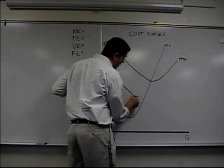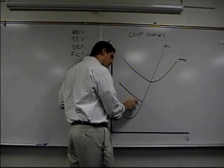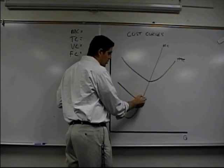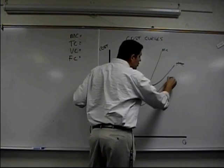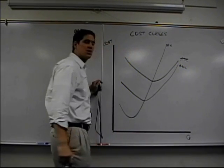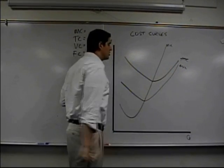Average variable cost looks like this. It goes down for the same reason. Marginal pulls it down and when above, marginal pulls it back up. But it gets closer and closer to ATC without actually touching. These get closer and closer without actually kissing.